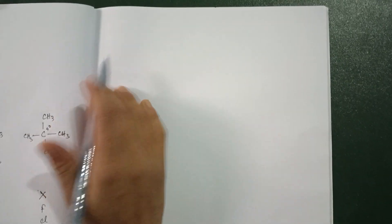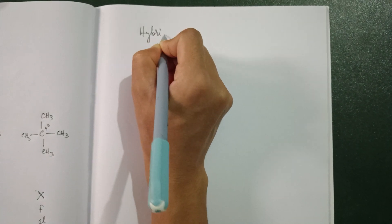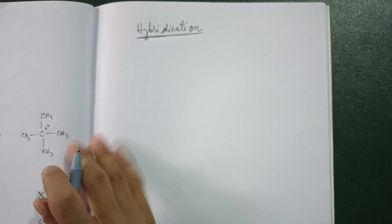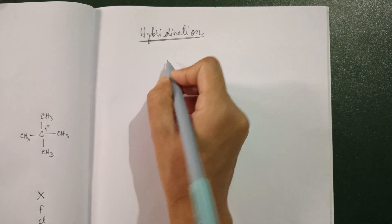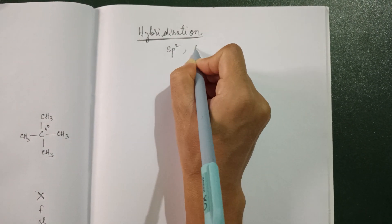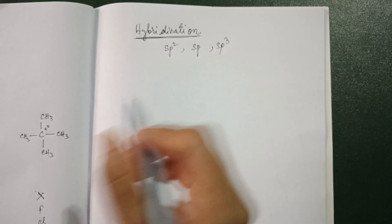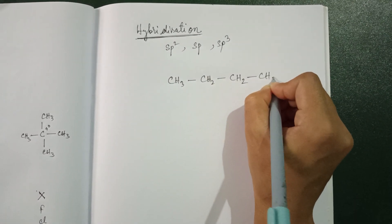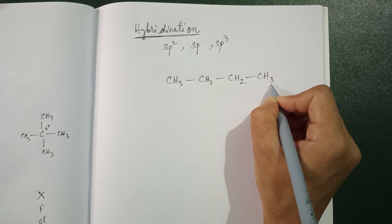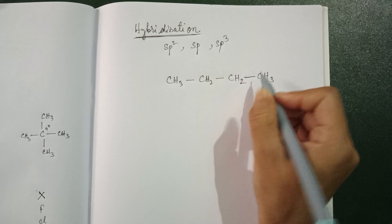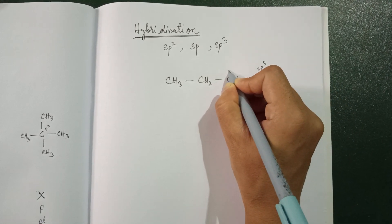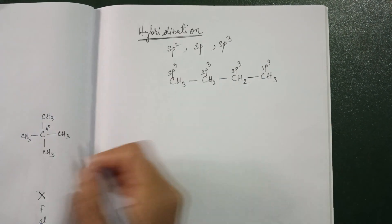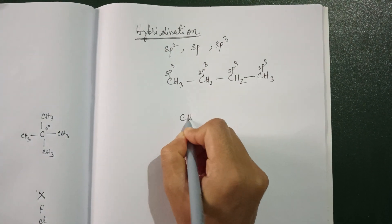Now let us talk about hybridization of carbon. Hybridization means the mixing of two or more orbitals. We will talk about sp3, sp2, and sp hybridization. Let me draw a carbon — you can balance the four valencies with any atom. Single-bonded carbons are always sp3.